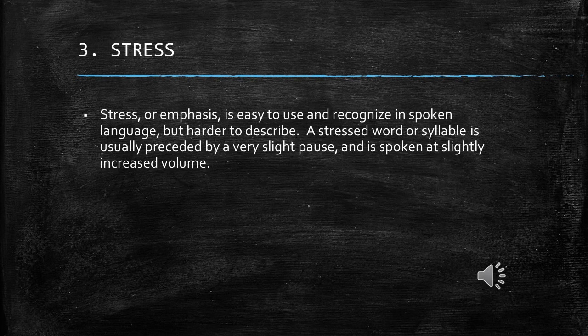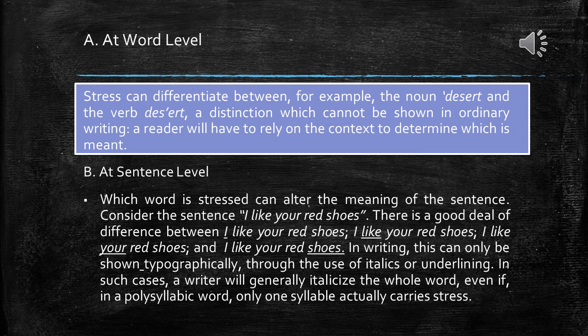Third, stress: Stress or emphasis is easy to use and recognize in spoken language but harder to describe. A stressed word or syllable is usually preceded by a very slight pause and is spoken at slightly increased volume. At word level, stress can differentiate between the noun 'desert' and the verb 'desert,' a distinction which cannot be shown in ordinary writing and requires context.